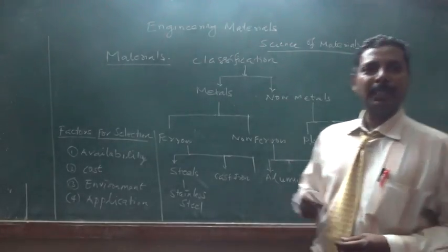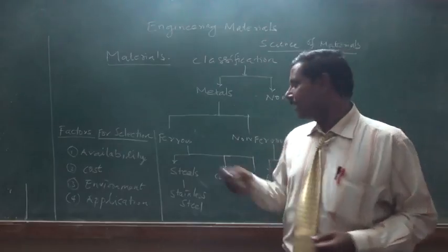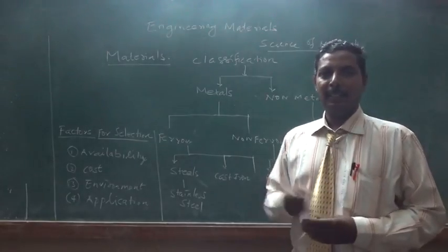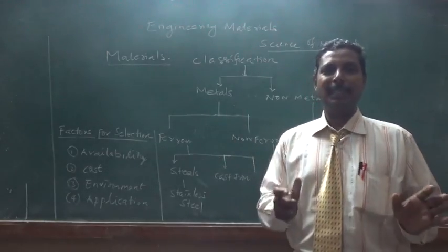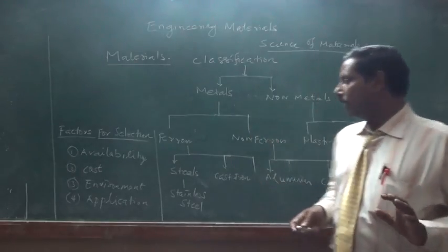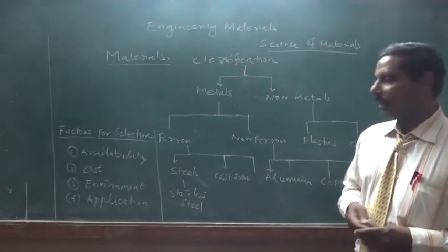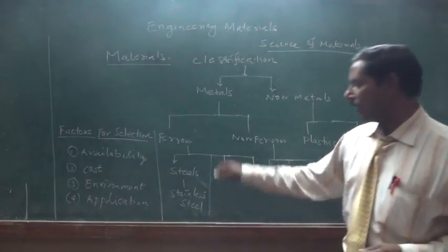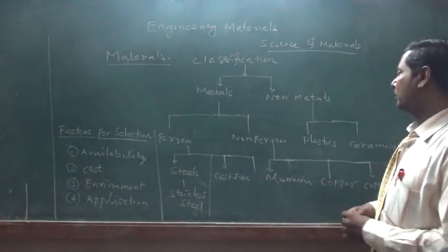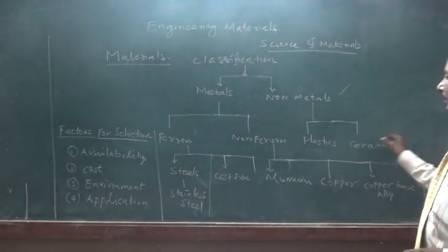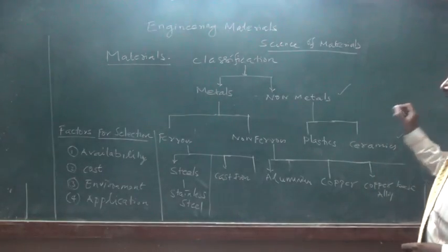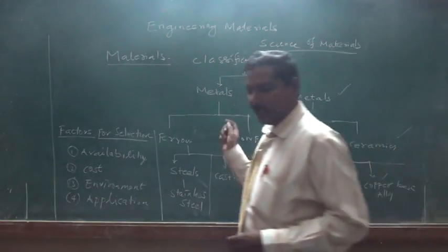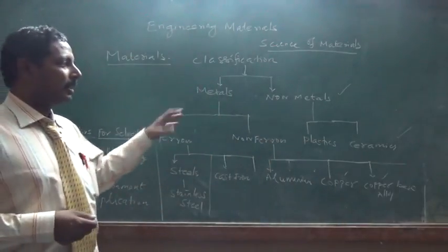In metals, the classification is mainly about ferrous and non-ferrous. Ferrous means we are having iron contents; non-ferrous means we are not having iron contents. That is the major criteria. For example, ferrous alloys are classified according to steel and cast iron, and steels are further classified including stainless steels. In the case of non-metals, plastics and ceramics come together. Non-ferrous materials include aluminum, copper, and copper-based alloys — these are the main classifications.